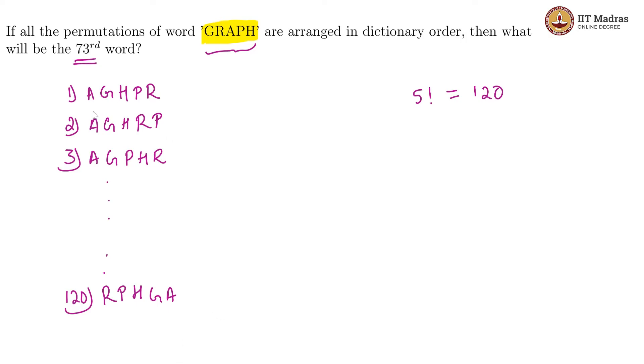So what is the 73rd word is what we are looking at. For that, now let us look at how many words we will get which begin with A. So if we fix A as the first letter, then we have 4 remaining boxes to be filled. And how many such permutations can we get? We will get 4 factorial because there are 4 boxes to be filled and all of them are filled by different objects.